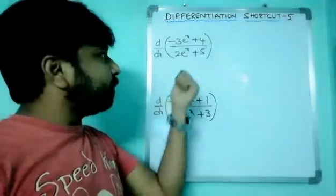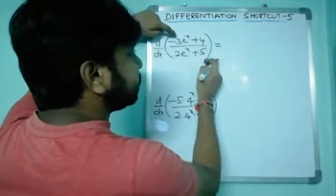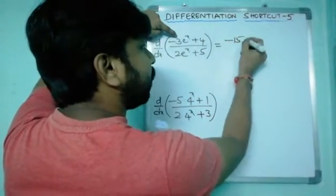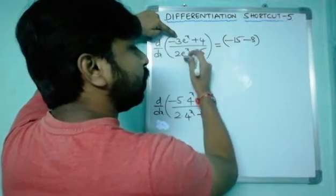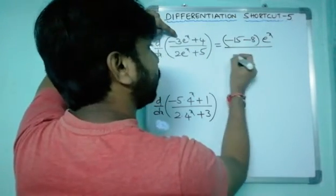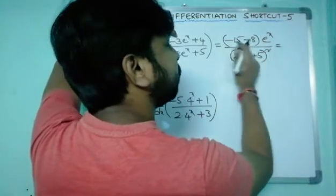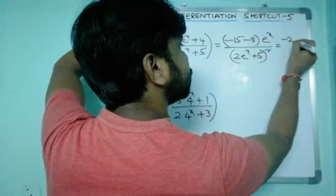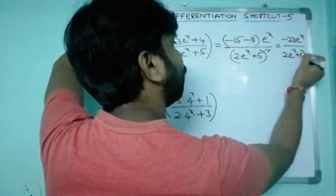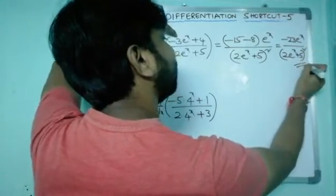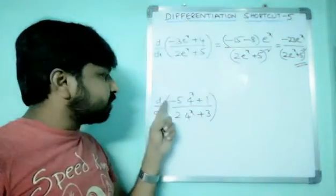Next example: d/dx of (−3·eˣ + 4) / (2·eˣ + 5). Using the shortcut — ad − bc = (−3)×5 − 2×4 = −15 − 8 = −23. The derivative of eˣ is eˣ. So the answer is −23·eˣ / (2·eˣ + 5)², that's all friends, just 3 seconds!